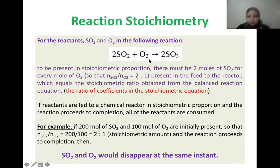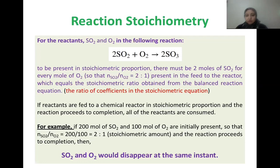Suppose we have a reactor and introduce a feed of 200 moles of SO2 and 100 moles of O2 as two reactants. The feed ratio of SO2 to O2 is 200 over 100, which equals 2 to 1. The stoichiometric ratio from the equation is also 2 to 1, so the feed ratio equals the stoichiometric ratio.